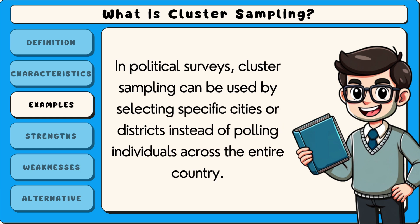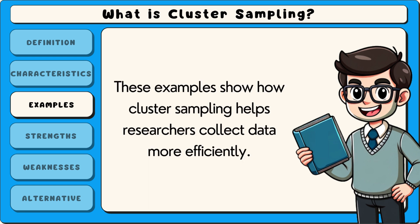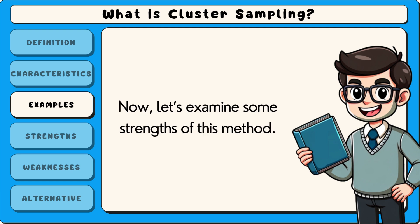In political surveys, cluster sampling can be used by selecting specific cities or districts instead of polling individuals across the entire country. These examples show how cluster sampling helps researchers collect data more efficiently. Now let's examine some strengths of this method.